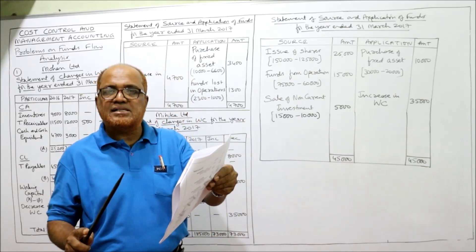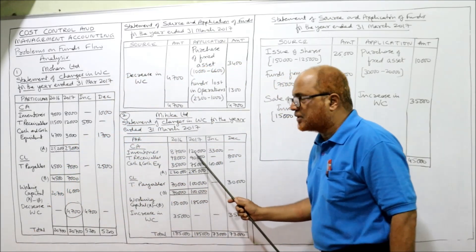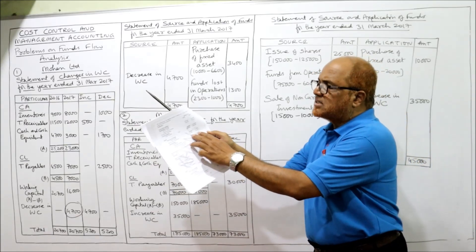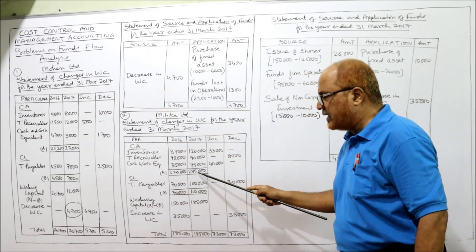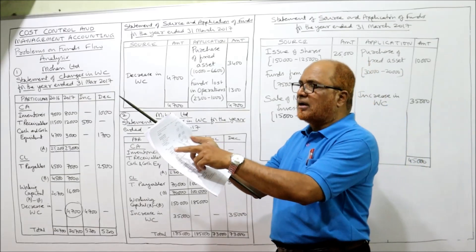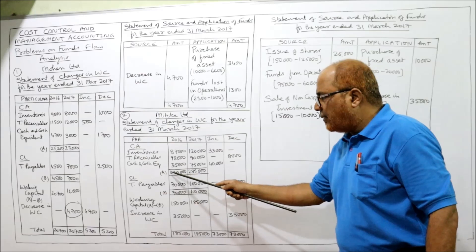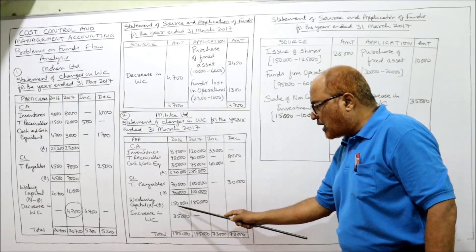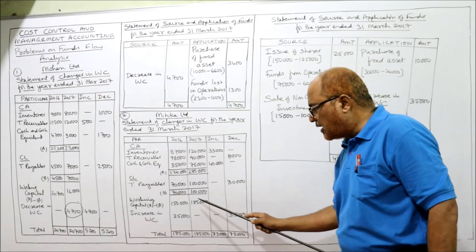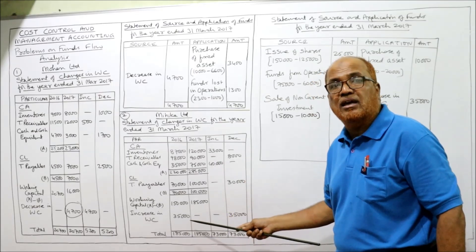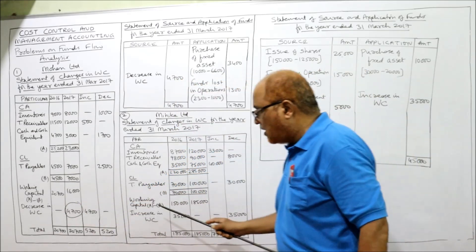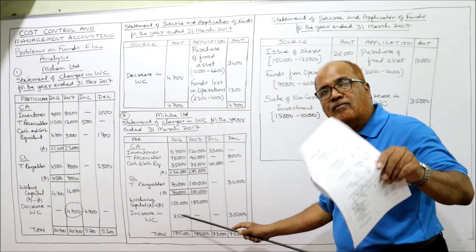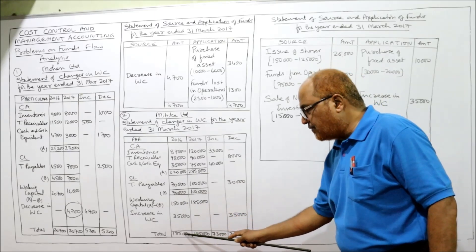Current assets and current liabilities are taken in the statement of changes in working capital. Inventory, trade receivable, and cash — take all values. Total current assets: last year 2,20,000, current year 2,85,000. Current liability — trade payable only. Working capital: 2,20,000 minus 70,000 equals 1,50,000 last year; 2,85,000 minus 1,00,000 equals 1,85,000 current year. There is an increase in working capital. 1,85,000 minus 1,50,000 equals 35,000. Put 35,000 in the lower column — that is last year — so both columns total 1,85,000.